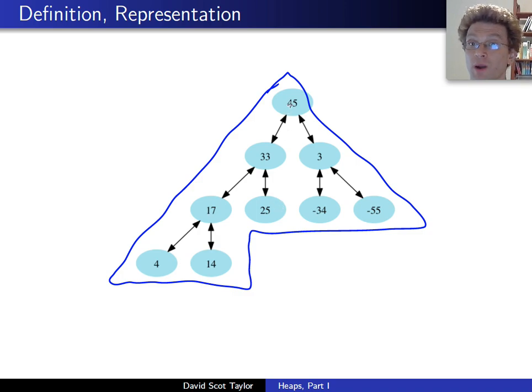Another important property is, in this case I'm dealing with a max heap. If you look, the value stored at each node is larger than the value in either of its children. So 45 is larger than both 33 and 3. 33 is larger than both 17 and 25. And on the other hand, we don't know anything about left child versus right child. So 33, the left child, can be bigger than 3, the right child.